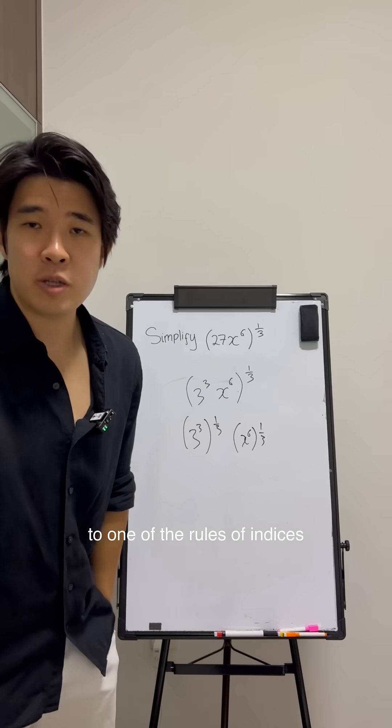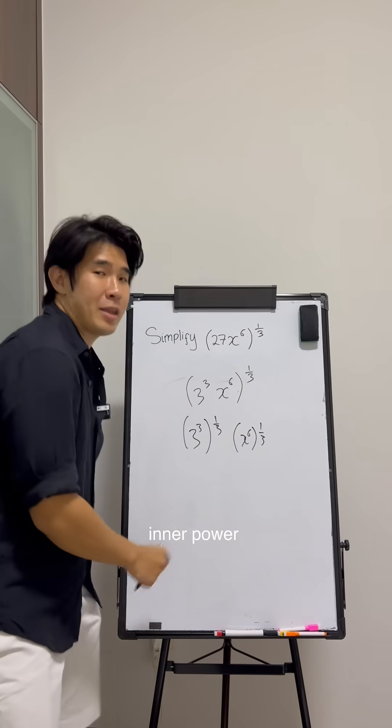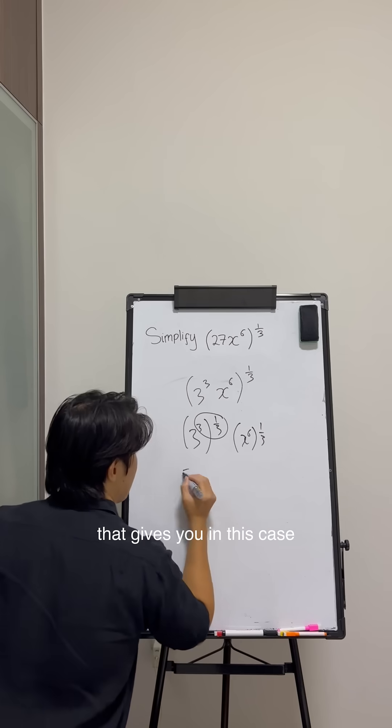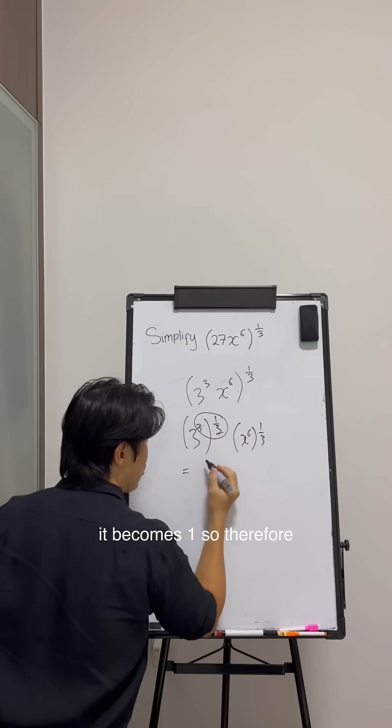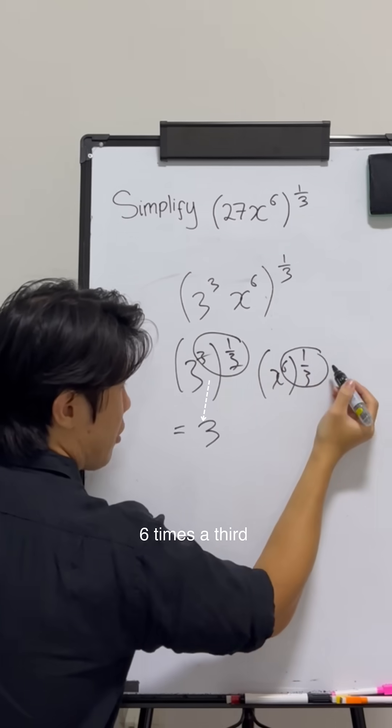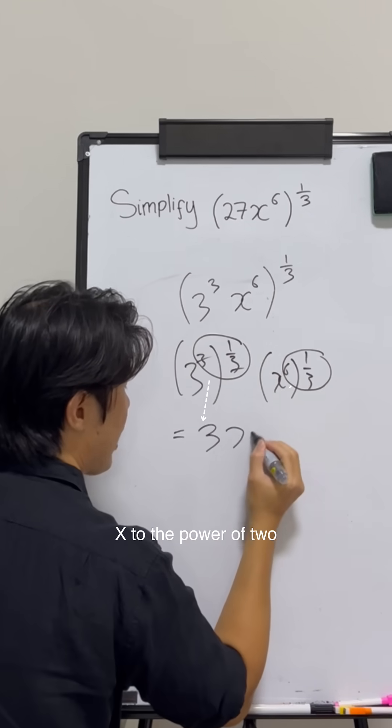Now, according to one of the rules of indices, if you have an inner power and an outer power, you must multiply them. So 3 times 1/3 gives you 1, so therefore that's just 3 to the power of 1, which is 3. 6 times 1/3 gives you 2, so that becomes x to the power of 2.